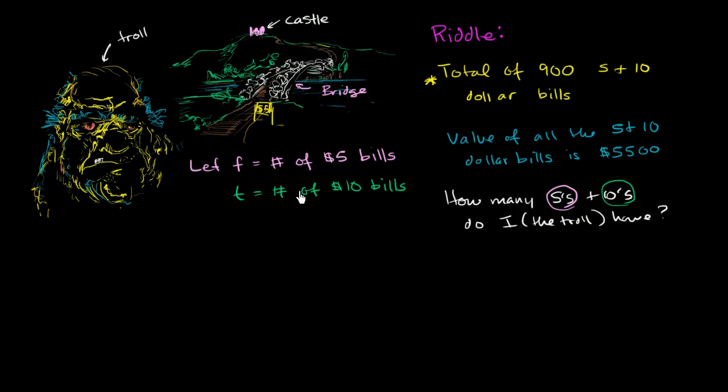Well, what's going to be our total of bills? It's going to be the number of 5s that we have, which is f. The number of 5s that we have is f. And then the number of 10s that we have is t. The total number of 5s plus the total number of 10s, that's our total number of bills. So that's going to be equal to 900. So this statement, this first clue in our riddle, the first clue in our riddle can be written mathematically like this if we defined the variables like that. And I just said f for 5 because f for 5 and t for 10.